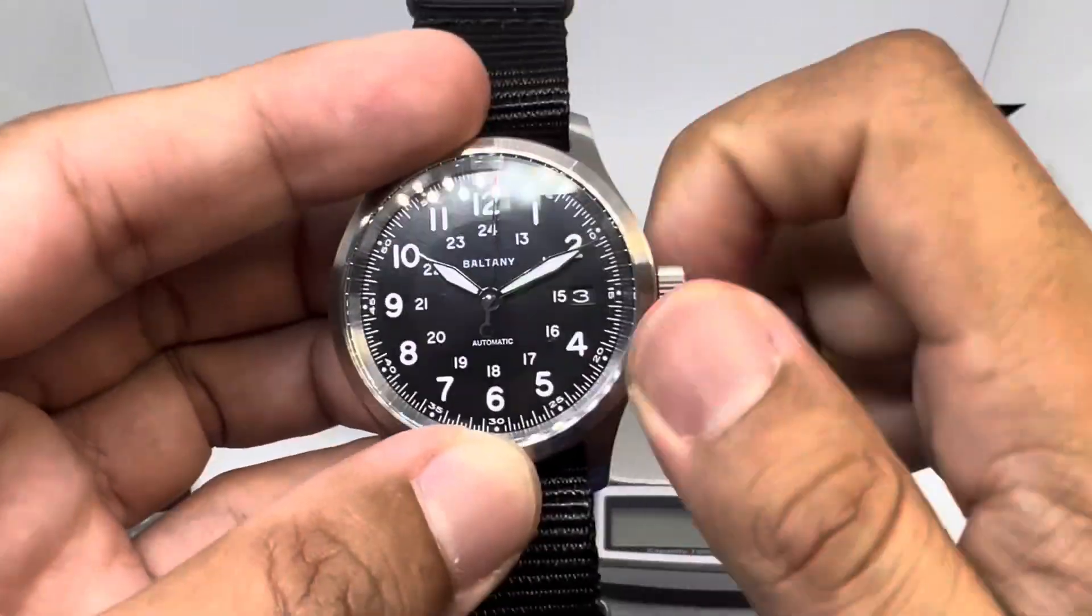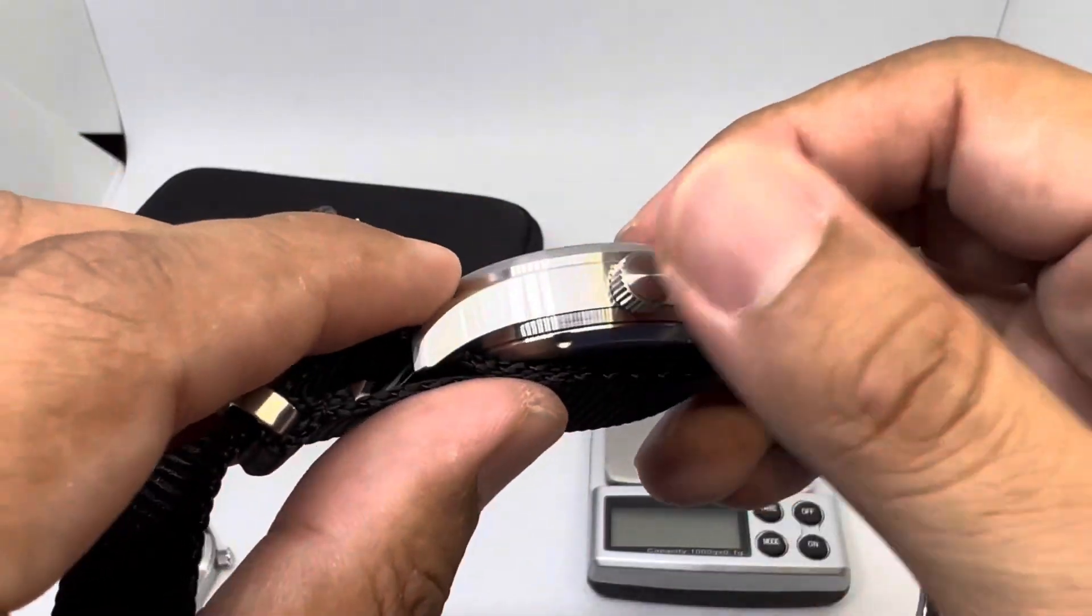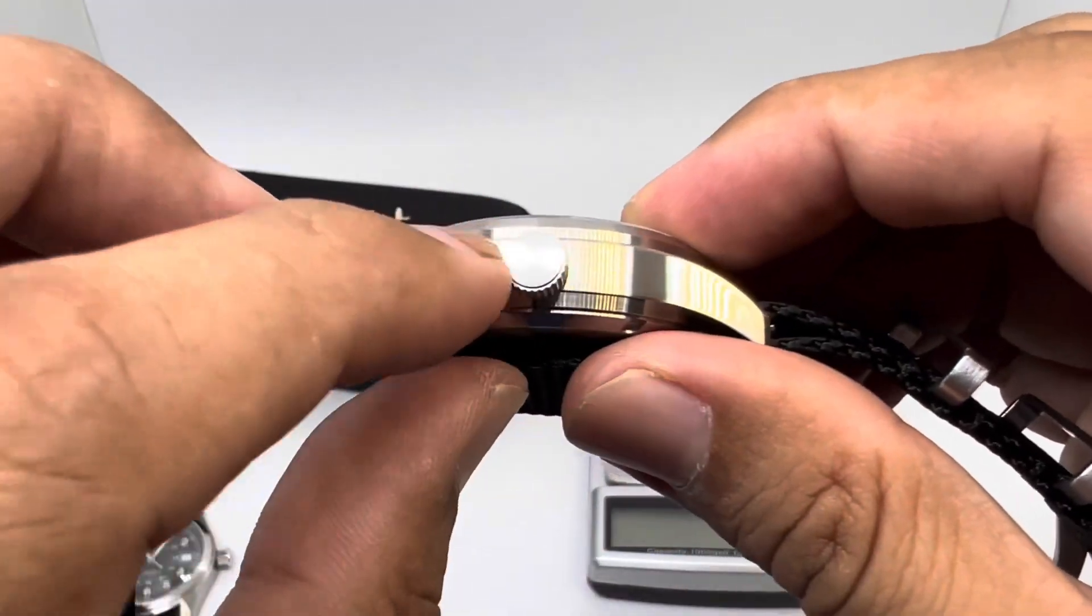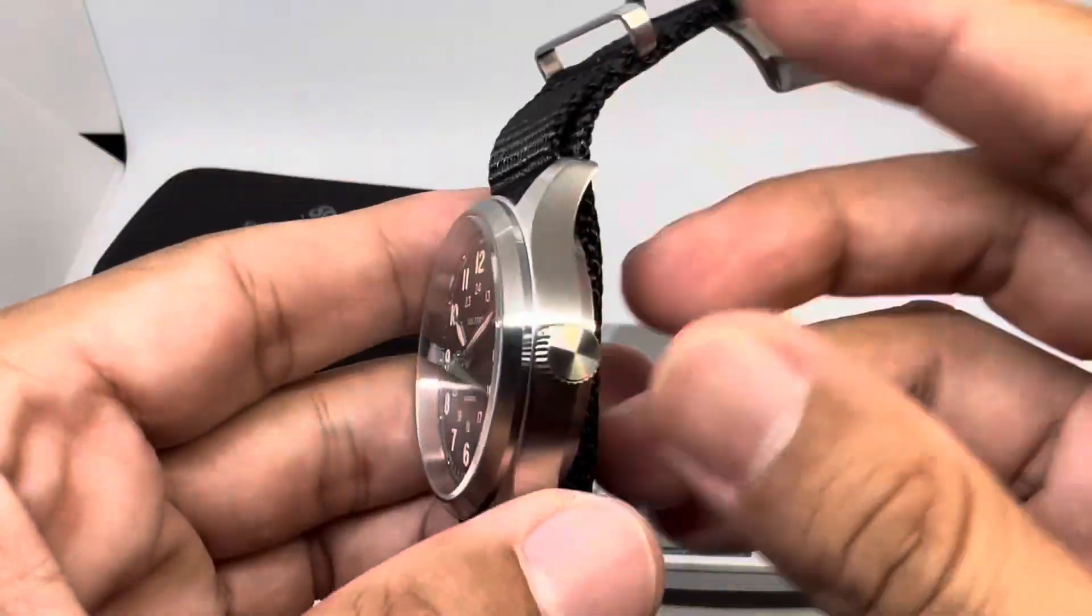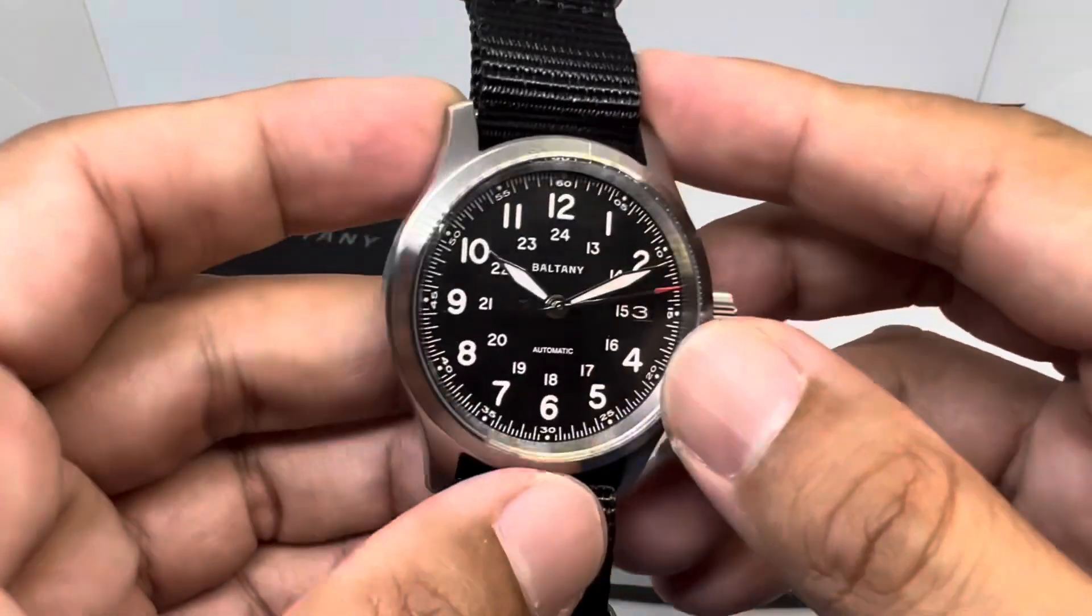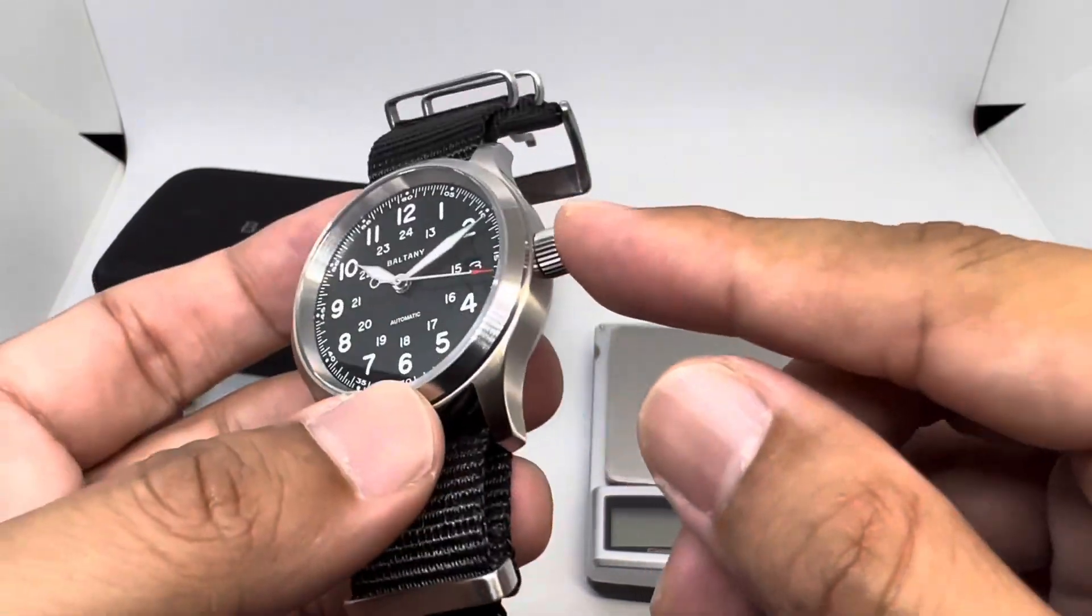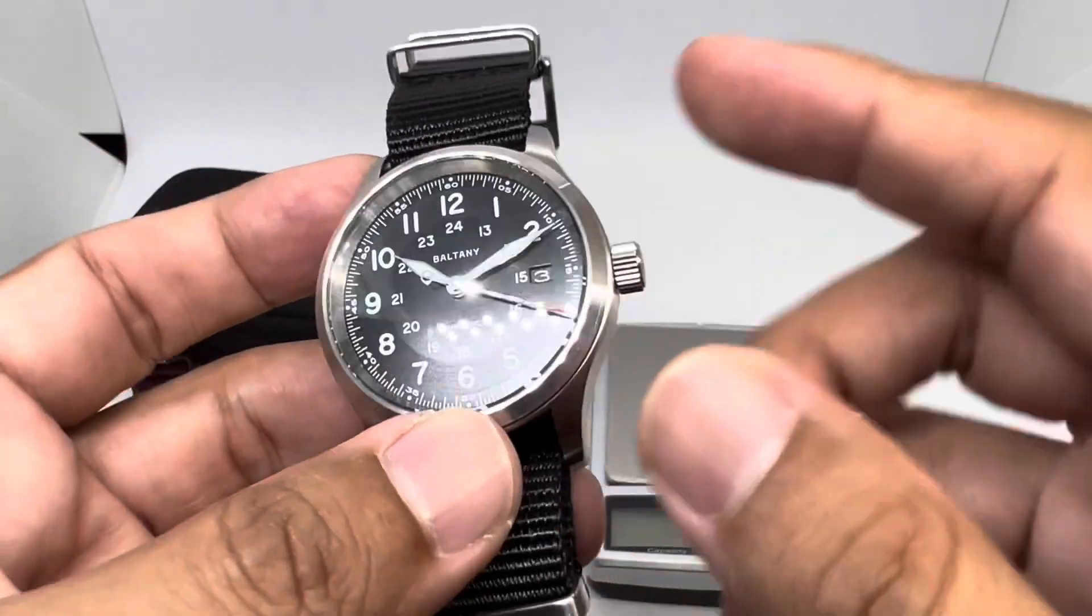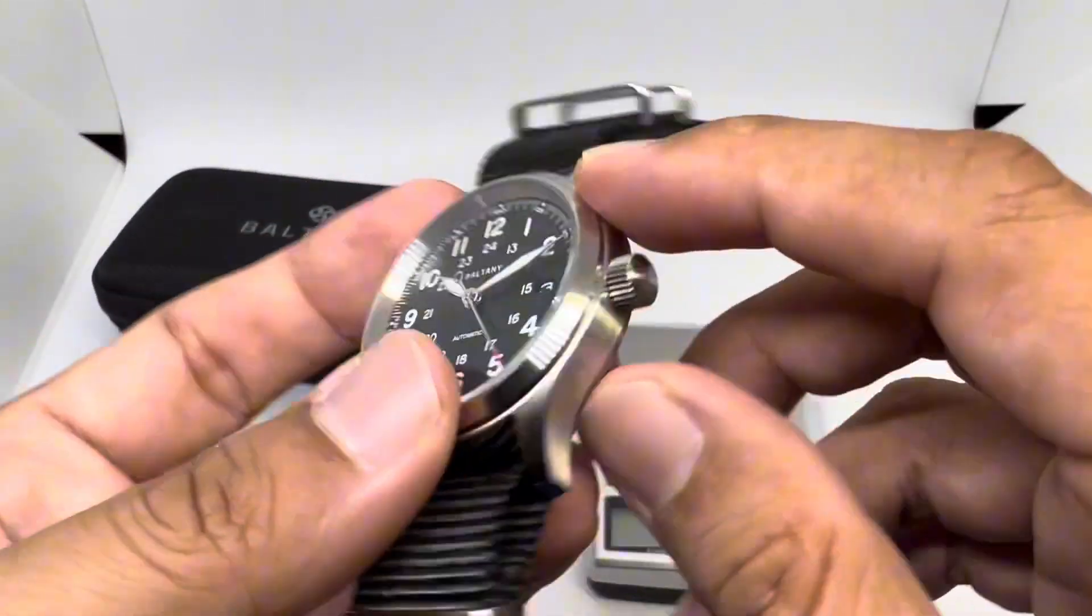It doesn't have any markings whatsoever, you just have this circular brushing here, which is okay. It's just a little bit too blunt, but maybe if you really need a logo here, I don't think so. Baltany here is good enough for me, but some people might prefer a signed crown.